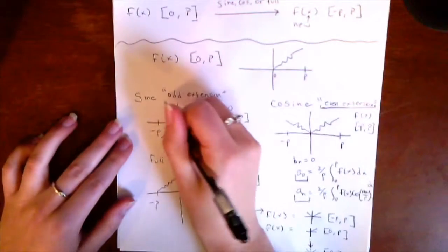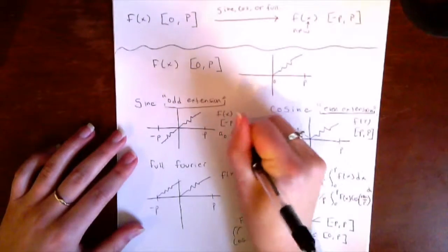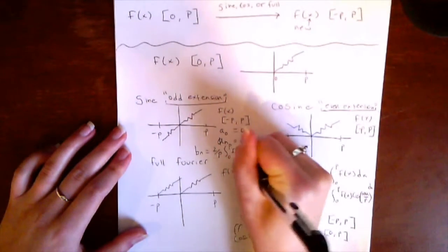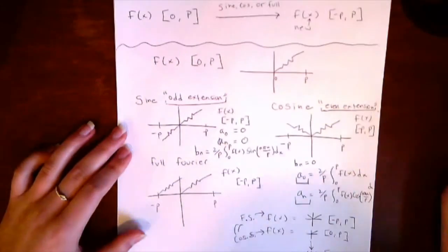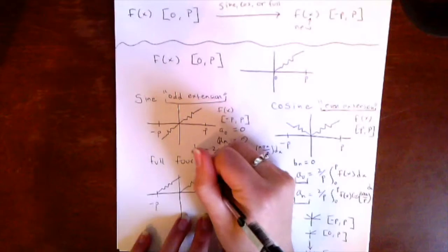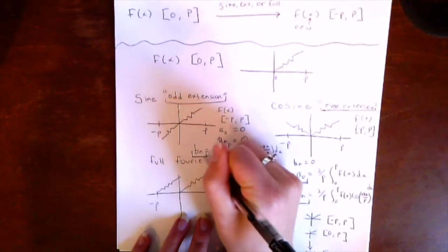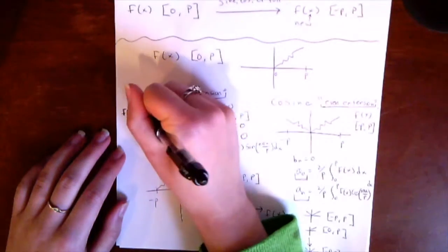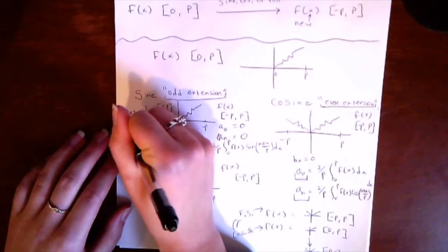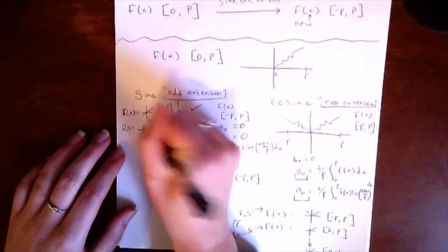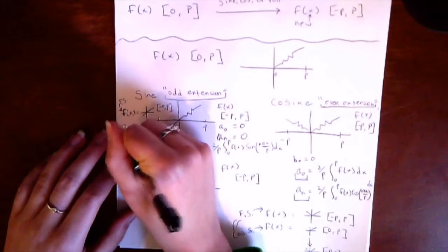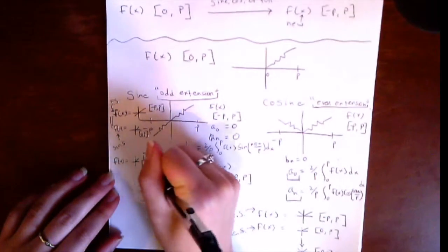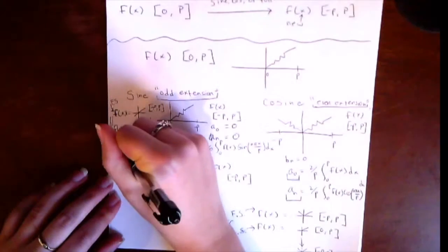If you did the sine extension, your function will always be odd. Since it is odd, a₀ equals 0 and a_n equals 0. b_n equals 2 over p times the integral from 0 to p of f(x) sine(nπx/p). Notice that b_n is the same as it would be for an odd function's Fourier series. This means that the sine series of a function on 0 to p gives the same representation as the Fourier series of the corresponding odd function on the full periodic interval. Taking the cosine series of the same odd function on 0 to p would give a different series, which I'll show in the example.